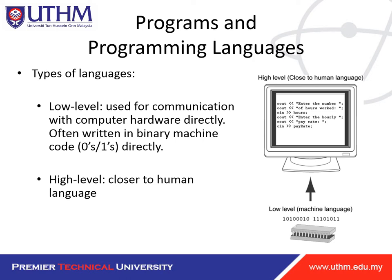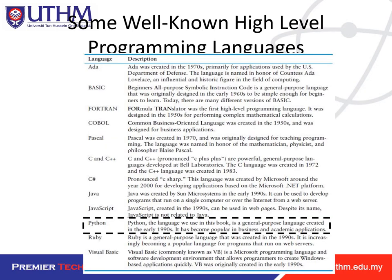Rather than writing programs in machine language, programmers use programming languages. There are low-level and high-level languages. Low-level is used for direct communication with computer hardware, often written in binary machine language. High-level language is close to human language. For this course we will use Python. Students taking BFC 20802 since 2019 have already been using Python instead of C++.